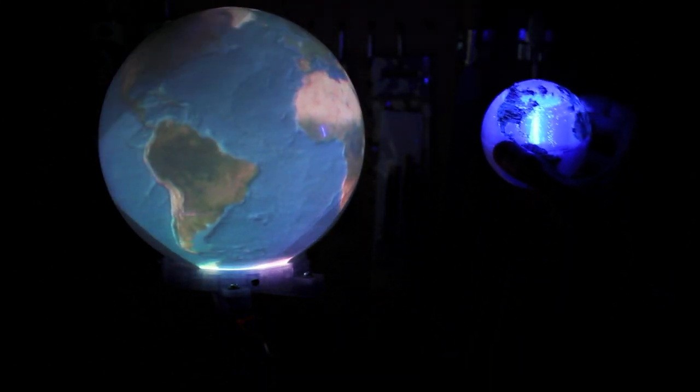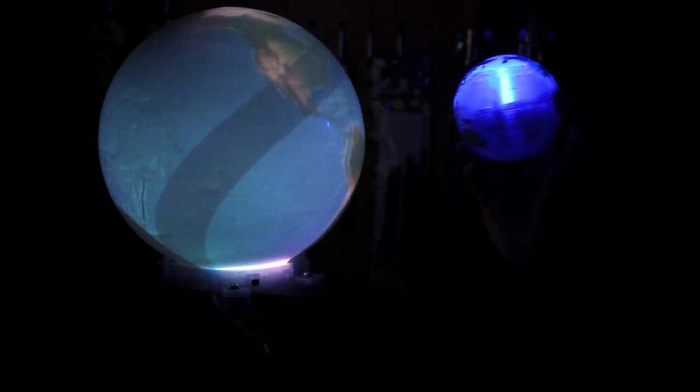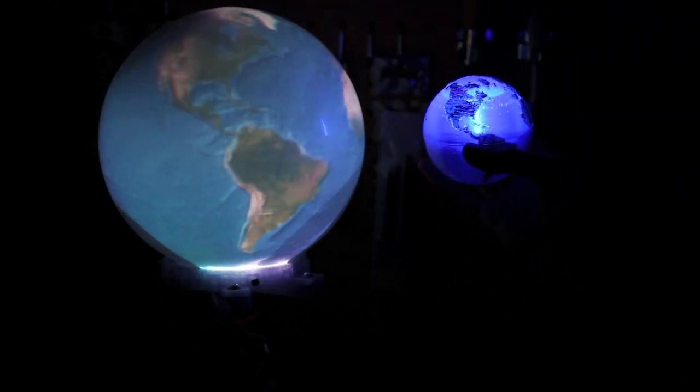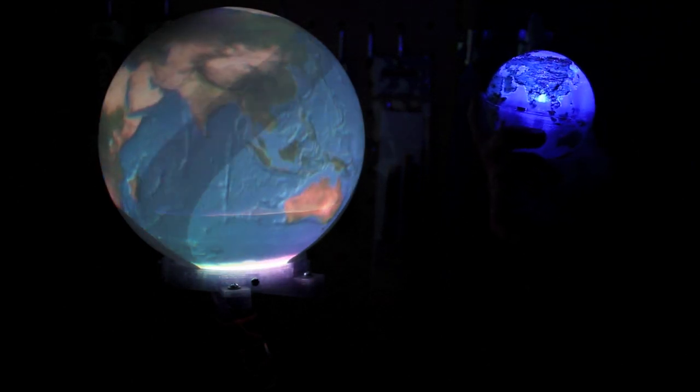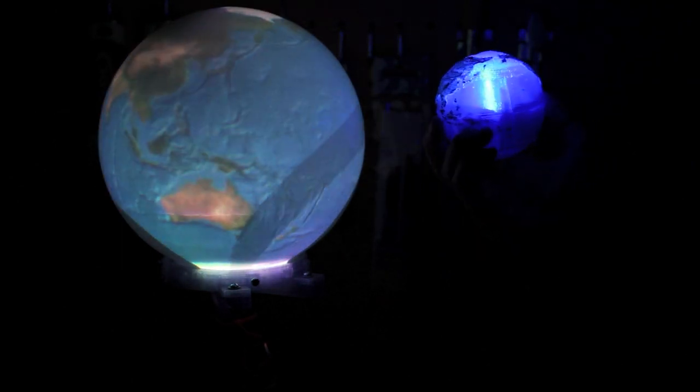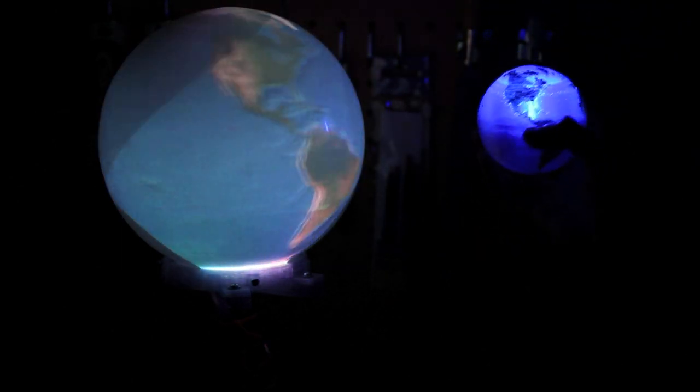This is a 3D printed model of the Earth that controls the rotation of the Snowglobe. Inside this model is an inertial measurement unit that my friend Donny and I have been working on for the last few months.